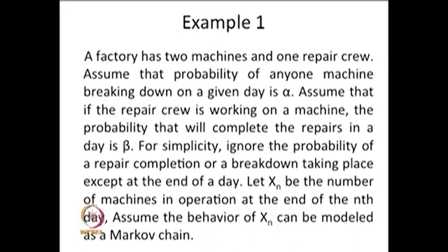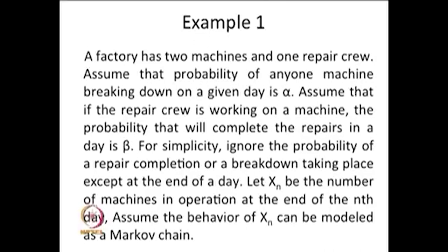Let X_N be the number of machines in operation at the end of the nth day. Assume that the behaviour of X_N can be modeled as a Markov chain. The machine can break down; we have only one repair person, and the probability that he can complete a repair in a day is beta, while 1 minus beta is the probability that he cannot complete the repair of a machine in a day.